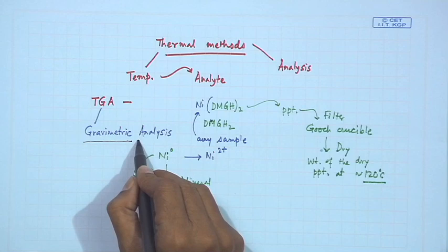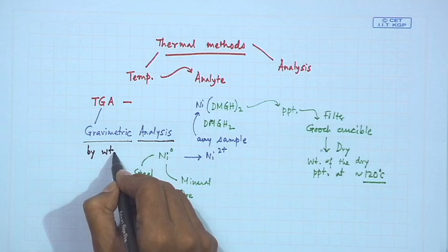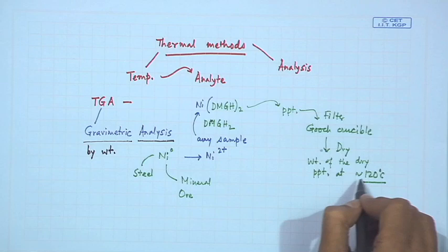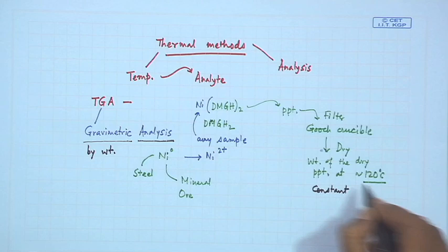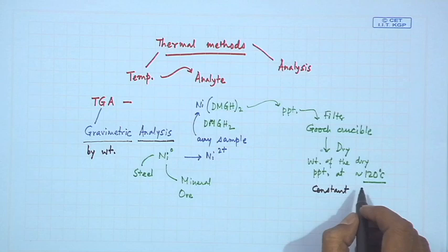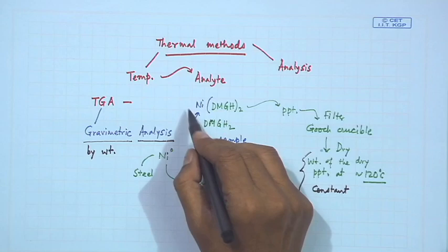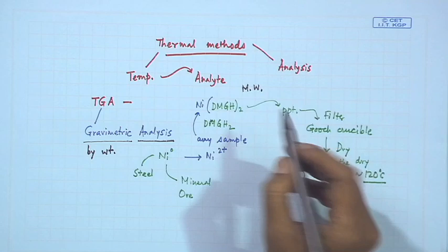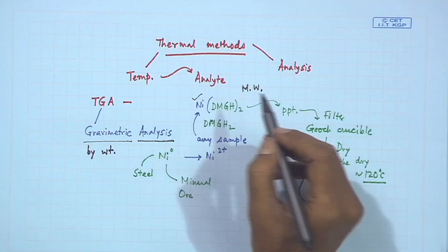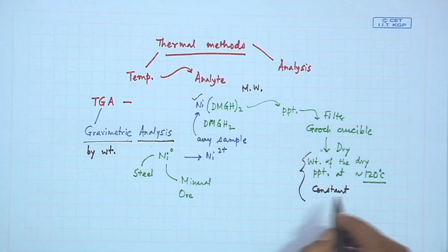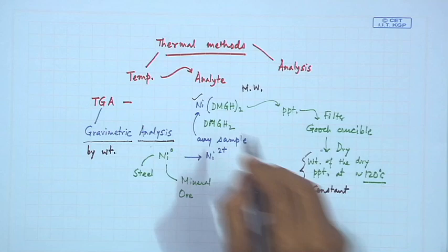We are unknowingly doing gravimetric analysis — measuring by weight. The weight of the precipitate must be constant at this particular temperature; it should not be hygroscopic and should not decompose. We must know the formula weight and molecular weight, since that molecular weight tells us how much sample corresponds to one atomic weight of nickel. This constant weight at 120°C confirms the precipitate is stable and will not decompose.